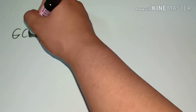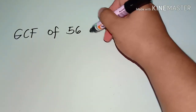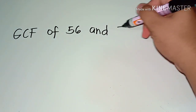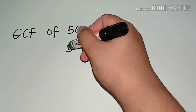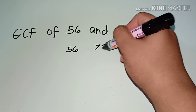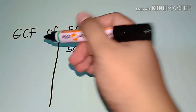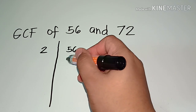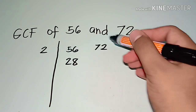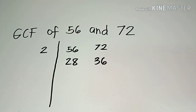Next example: what if we are looking for the greatest common factor of 56 and 72? Again, I'll be using the ladder method. So write 56 and 72 here, then use division. Since they are both even numbers, we'll divide by 2. 56 divided by 2 gives you 28, and 72 divided by 2 is 36.